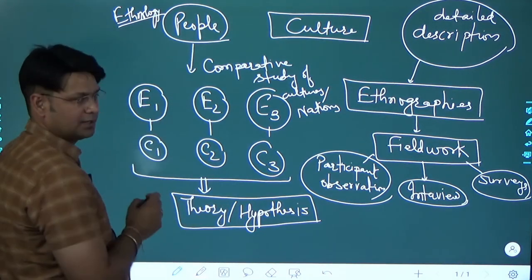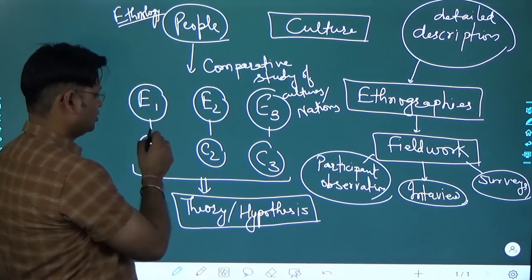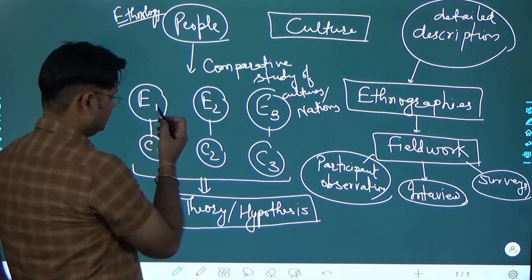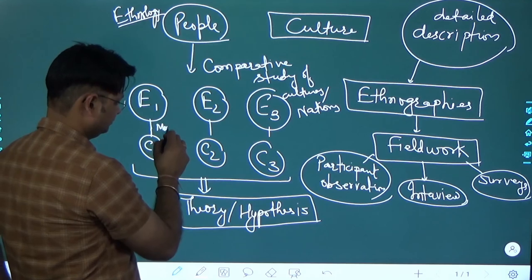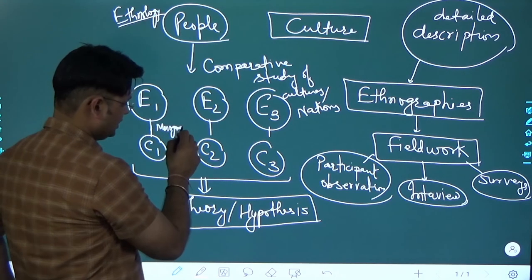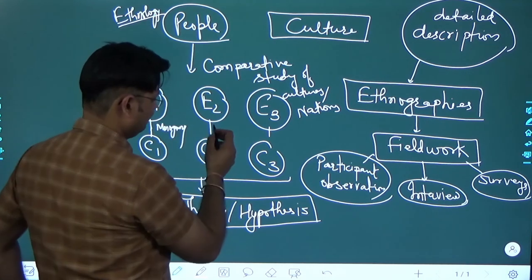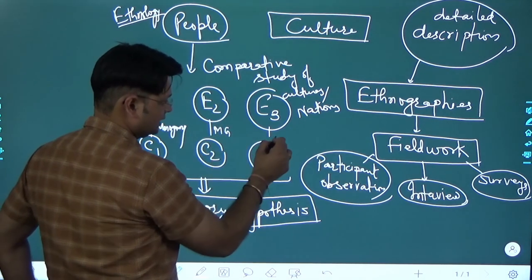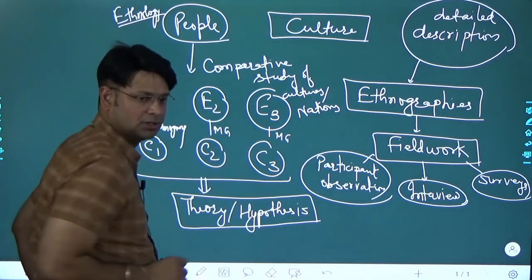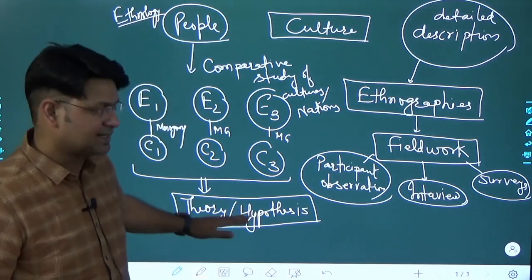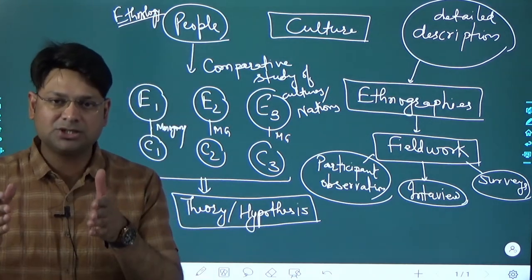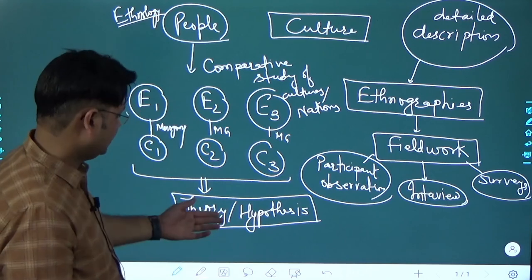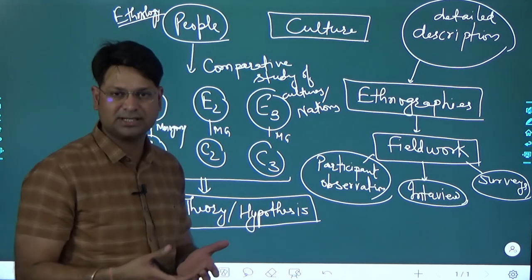In culture 1, ethnographer found that there is monogamy. In culture 2 also they found, another ethnographer found monogamy. Here also monogamy was found. So ethnologist can say that monogamy is universal, so it becomes a theory, a hypothesis.